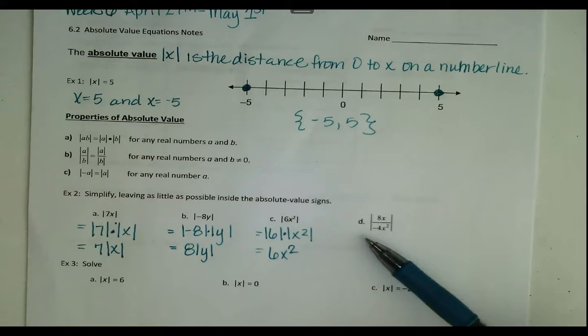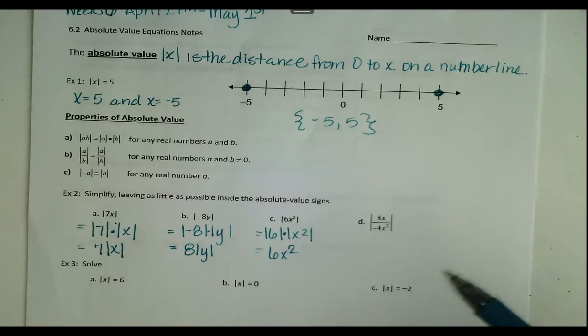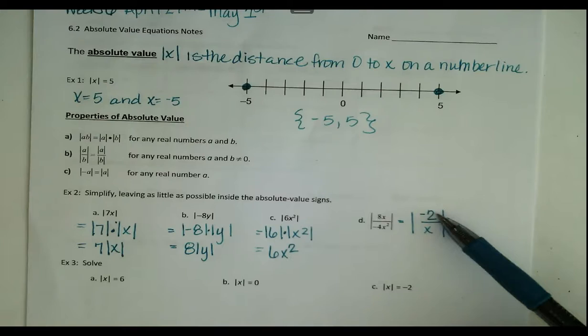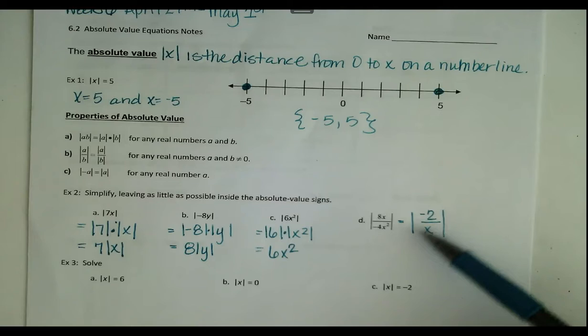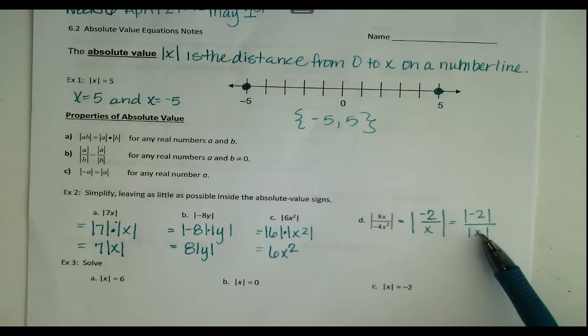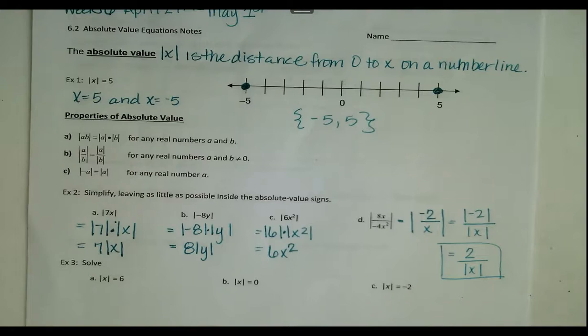Letter D: we have a fraction with some variables. First, simplify inside — divide 8 by negative 4 to get negative 2, and x over x squared reduces to 1 over x. So we have the absolute value of negative 2 over x. Now we separate using the division property: the absolute value of negative 2 over the absolute value of x. The absolute value of negative 2 is 2, giving us a final answer of 2 over the absolute value of x. Remember, x alone must stay inside the absolute value bar.